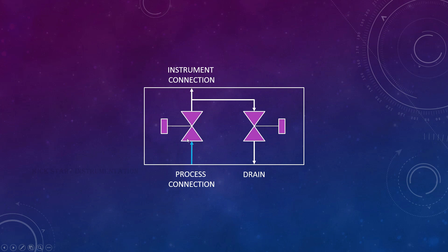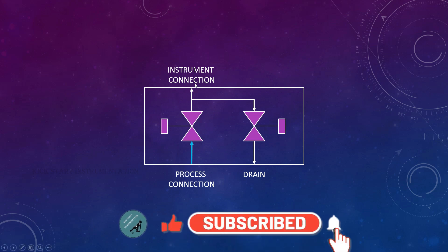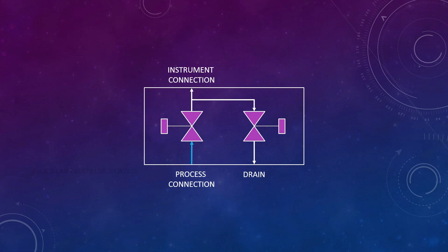Now valve 1 as well as valve 2 are in the closed position. At this position it is safe to install the instrument and connect it with the manifold valve. It will be connected with a male or female connector as per the specification. To avoid leaks, we have to use a small Teflon tape so that it is fixed properly and there is no further leak.